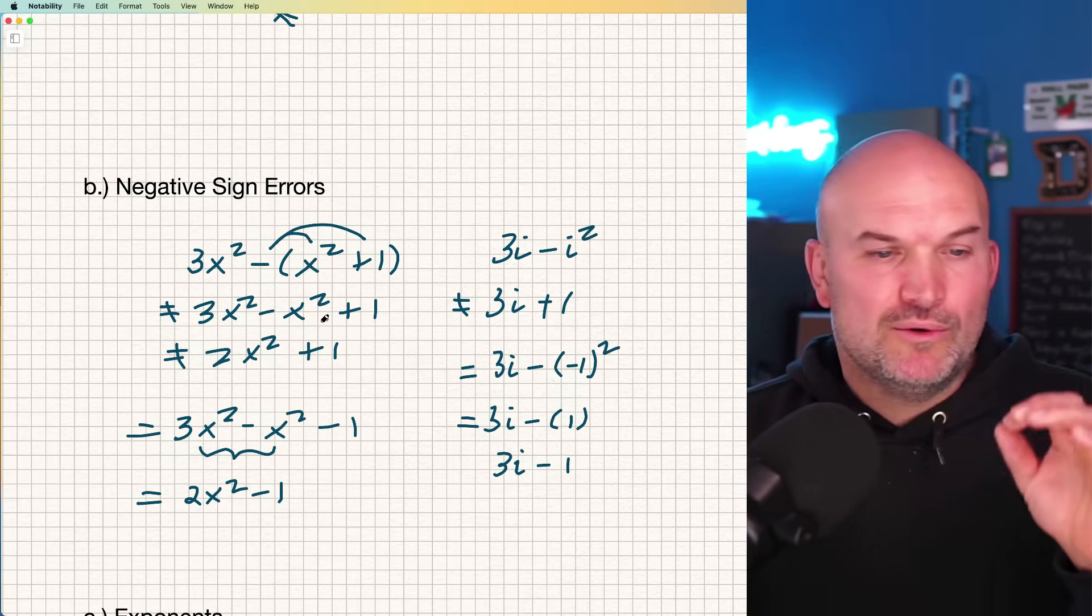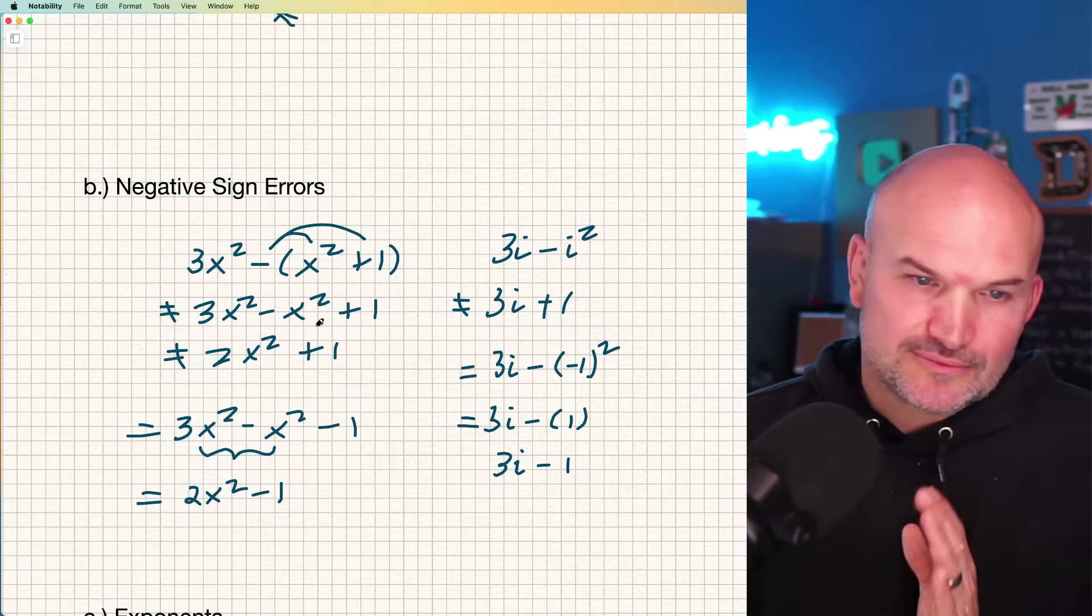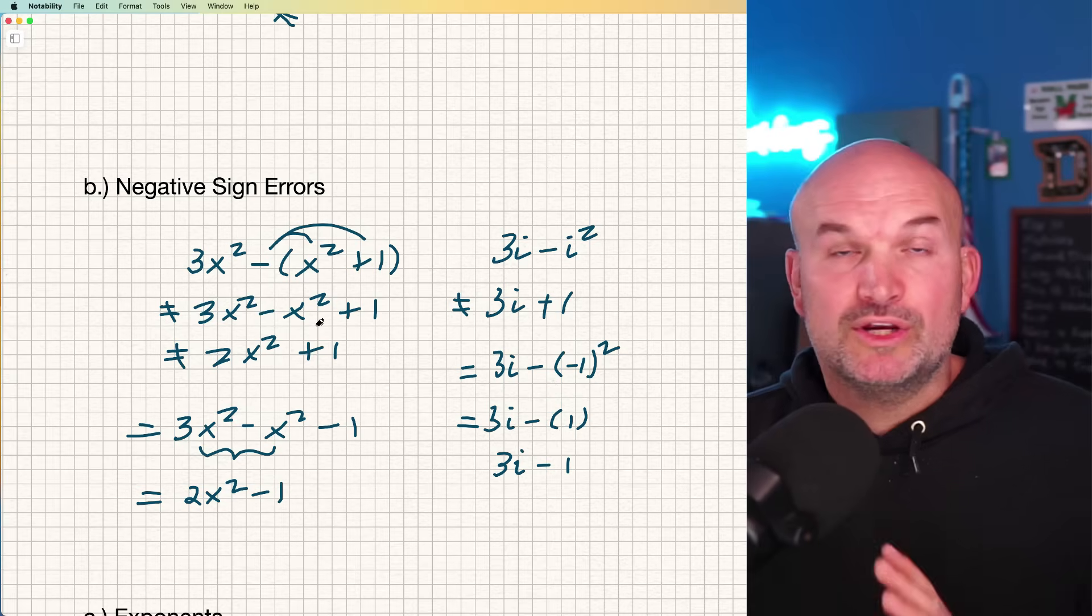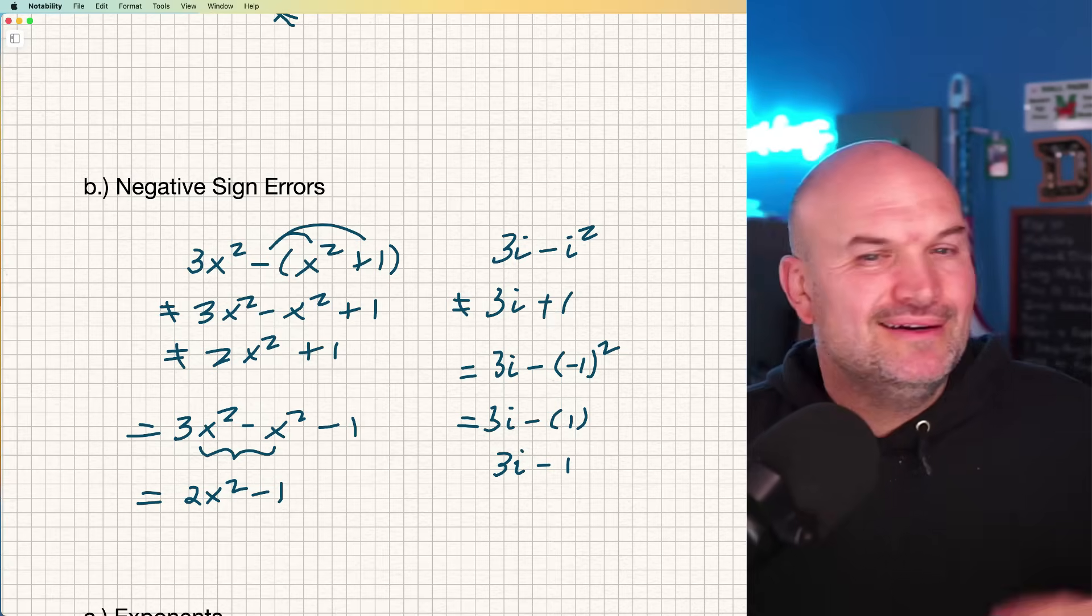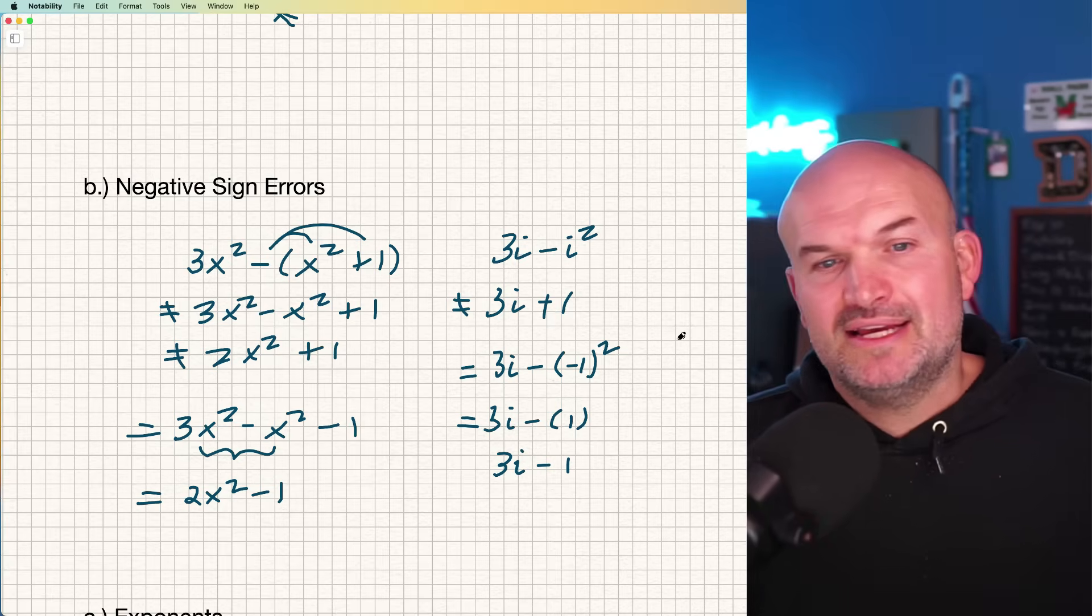Just make sure also when you're solving with radicals, remember when we multiply and divide by a negative number, we flip the inequality sign. So that's just a quick little tip from algebra one. But again, students will make mistakes on an exam.